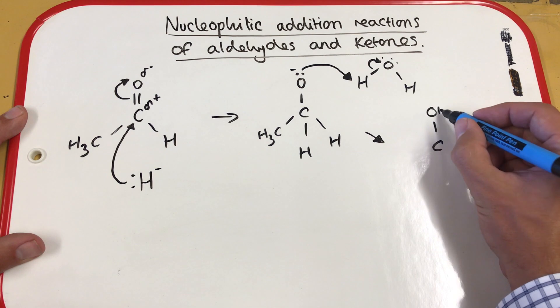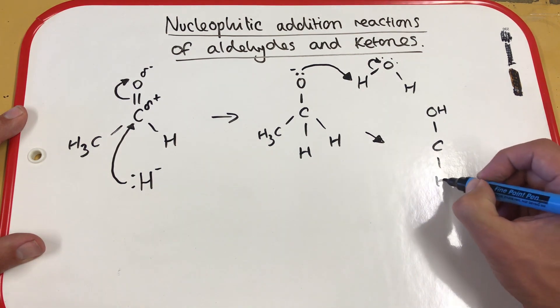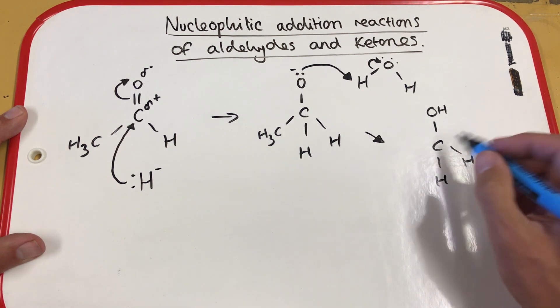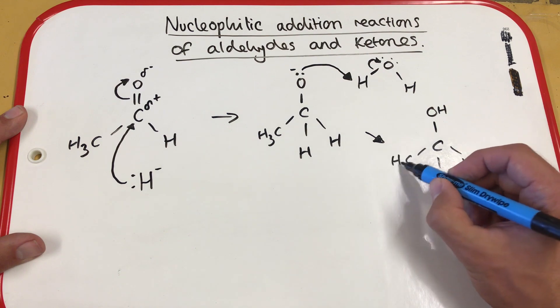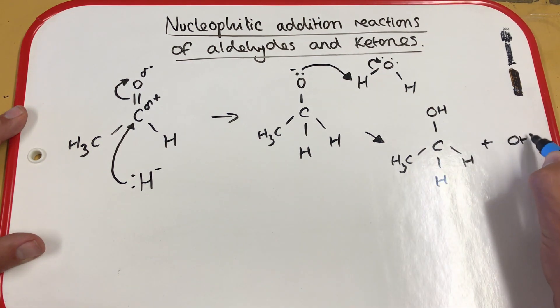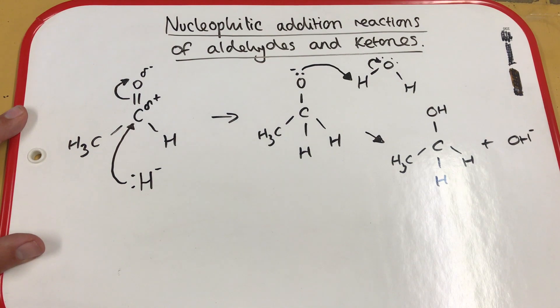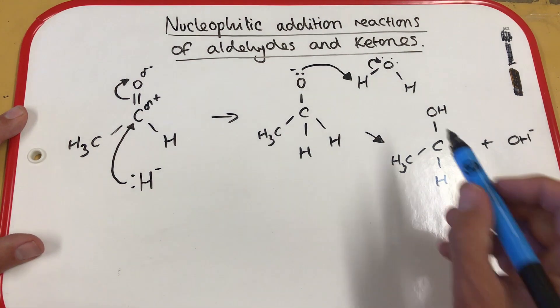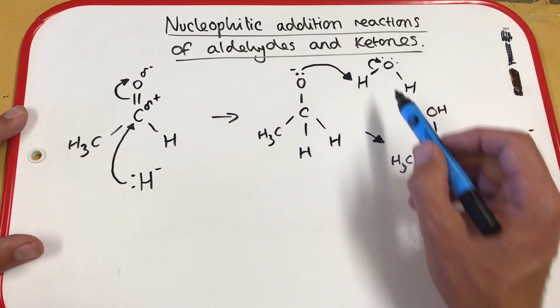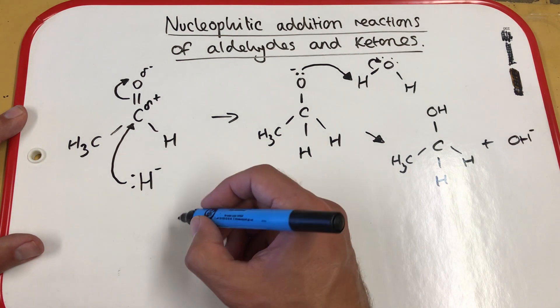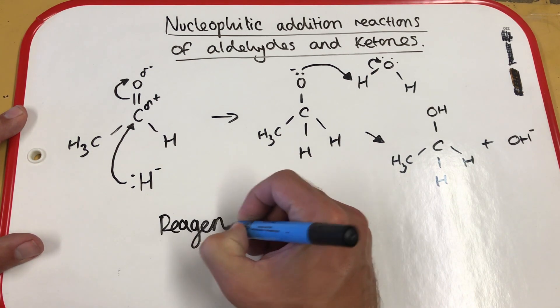So this is our product, our alcohol, our ethanol product. We also produce the OH- ions as well. So these are released from the water. Now, I said that we talk about the source of the water. So the water has come from the reagents and conditions.